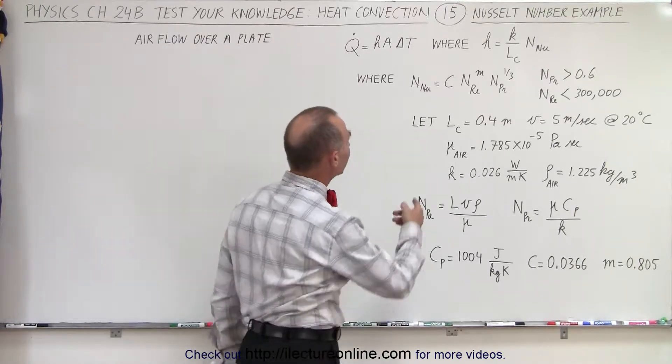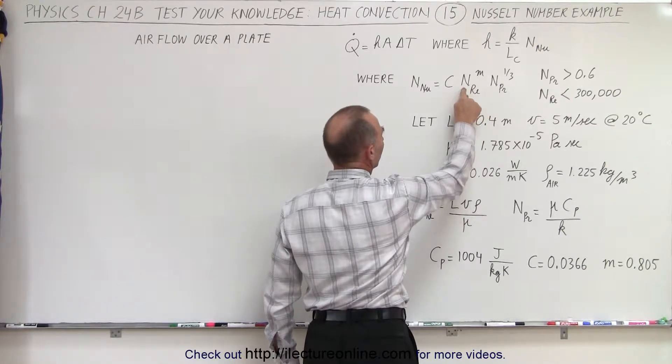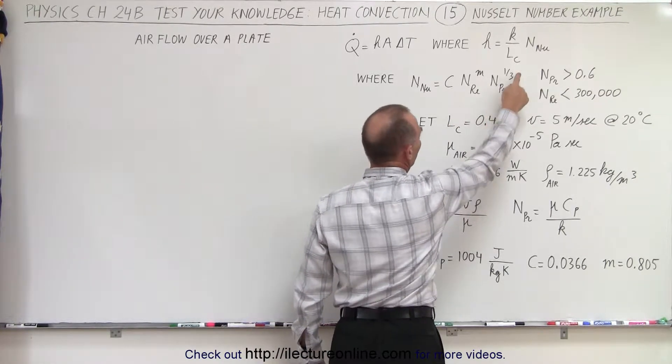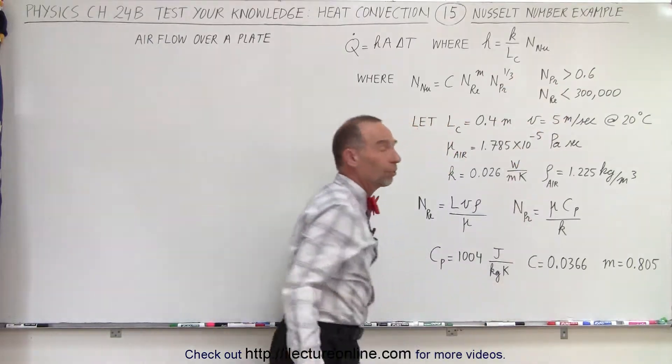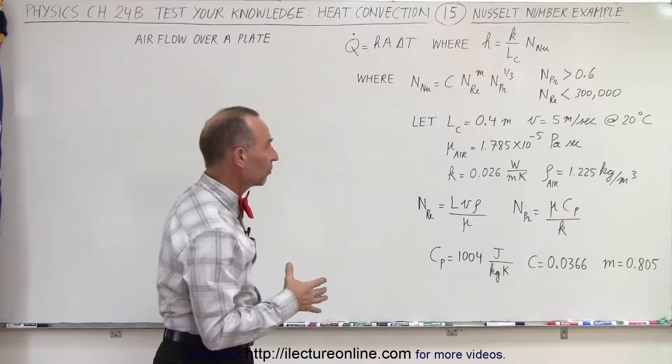Now the Nusselt number can be calculated by finding a constant in the table depending upon the value of the Reynolds number, the Reynolds number to some exponent, and the Prandtl number to the one-third power, presuming that the Prandtl number is greater than 0.6 and the Reynolds number is less than 300,000.